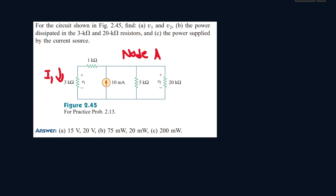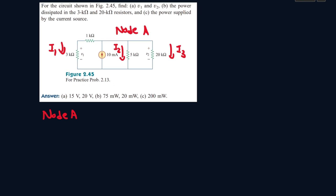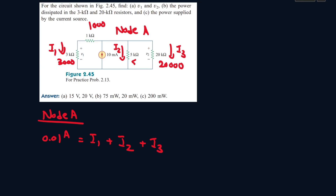Let's call the currents i1, i2, and i3, and write the KCL equation for node A. We see the 10 milliamp current is entering the node, and i1, i2, and i3 are leaving the node. Let's convert everything to ohms and amps: 10 milliamps is 0.01 amps, and the resistors are 3000, 1000, 20000, and 5000 ohms.